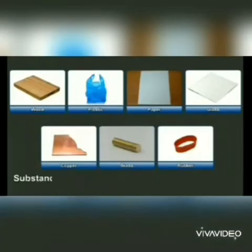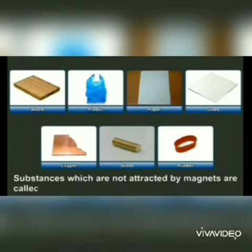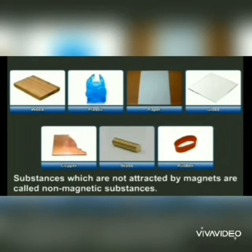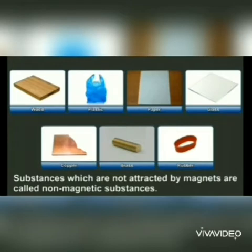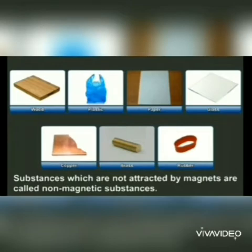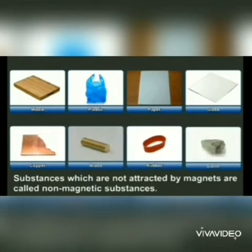On the other hand, substances which are not attracted by magnets are called non-magnetic substances. Jo substances magnet dvara attracted nahi hota hai, usse non-magnetic substances kaha jata hai. Joesse wood, book, glass, plastic, rubber, copper, stone, etc.